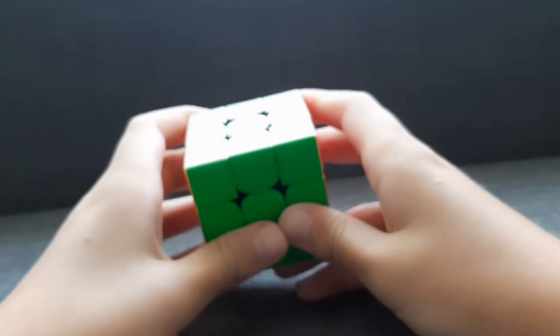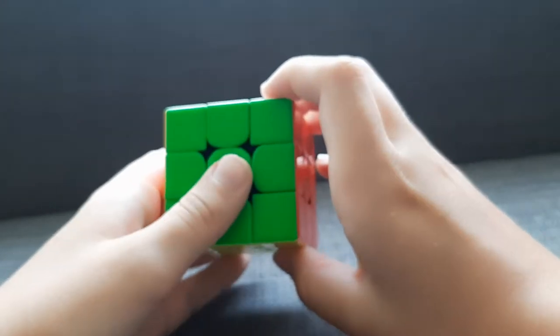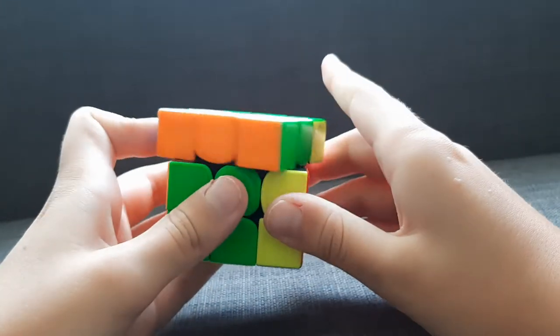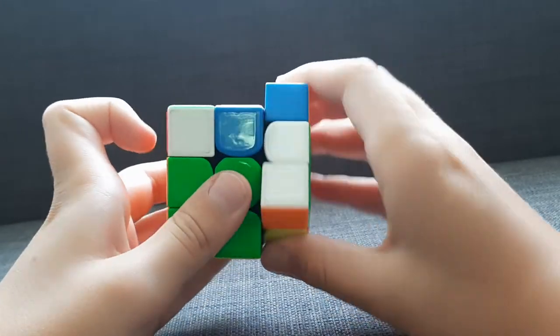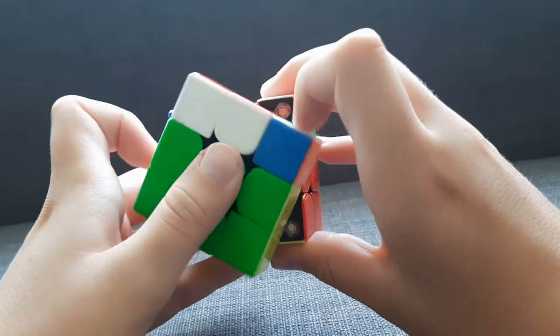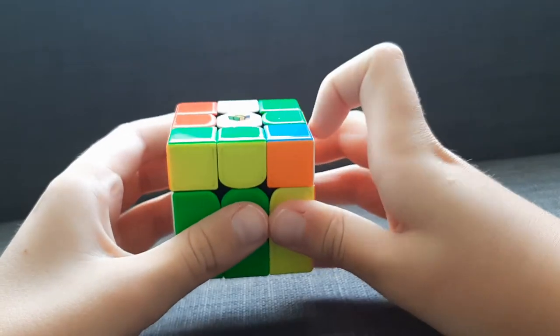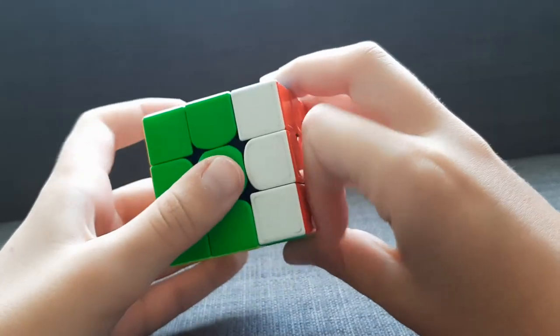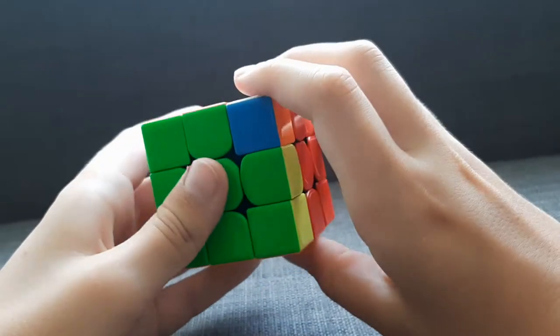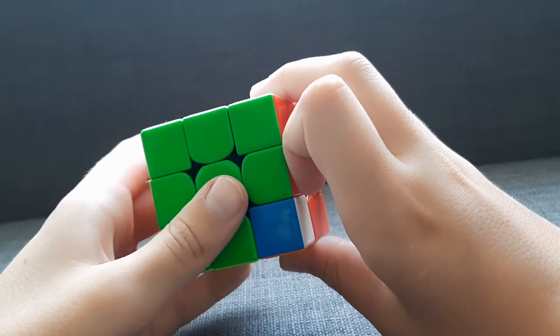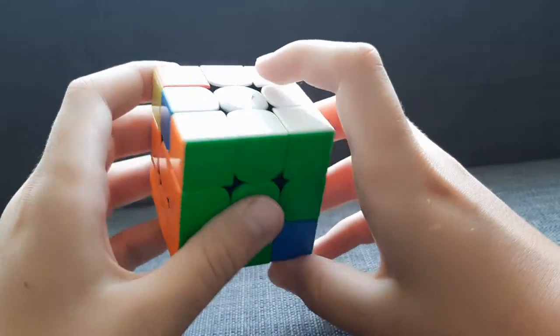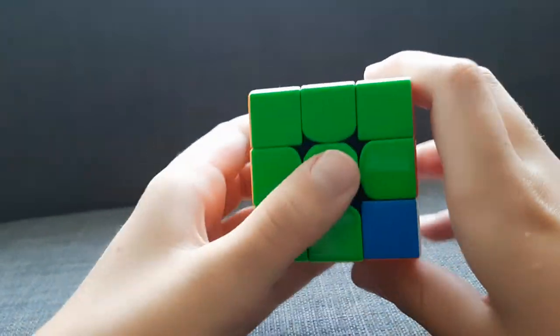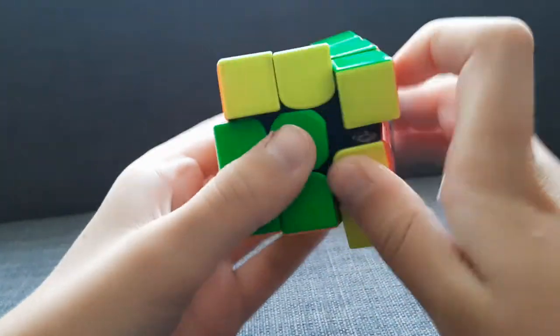So I'm just going to go through the algorithm one more time, slowly. R, U prime, R prime, U prime, R, U, R prime, F prime, R, U, R prime, U prime, R prime, F, R. Not the F prime at the end. Now that might seem long, but with good finger tricks, it can actually be done very quickly.